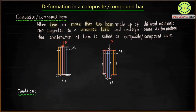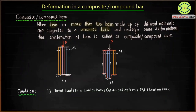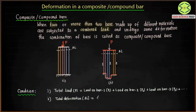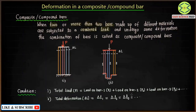A composite or compound bar must satisfy two conditions. First, the total load P must equal the sum of loads taken by each bar: P = P1 + P2 + P3, and so on. Second, the deformation in each bar must be the same: delta L is equal for all bars. Both conditions must be satisfied for an assembly to be called composite.